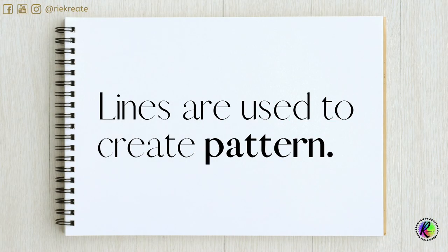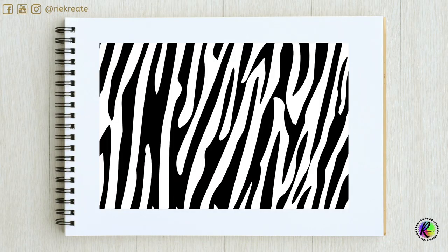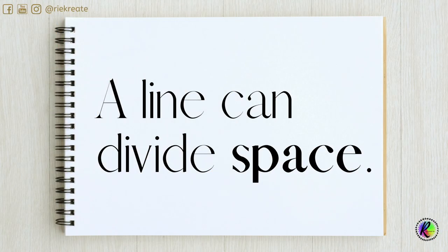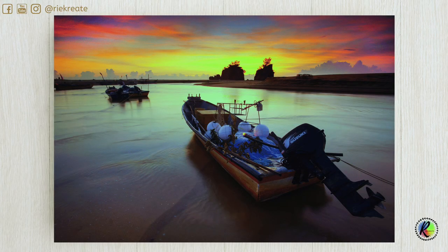Lines are also used to create pattern. This zebra pattern is created by the use of thick, tapering, and uneven lines. A line can also divide space — it distinguishes the horizon line and separates the background, middle ground, and foreground.